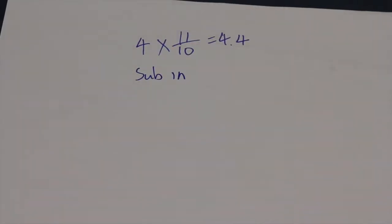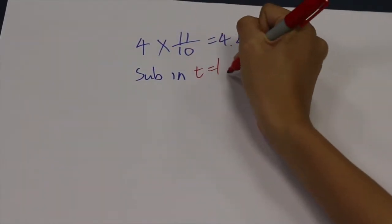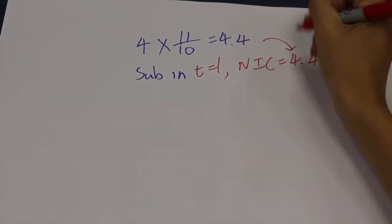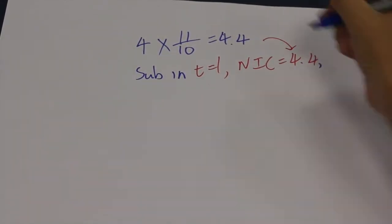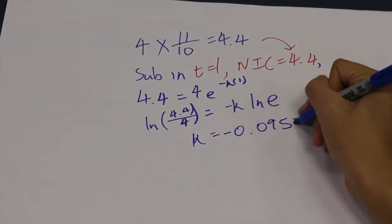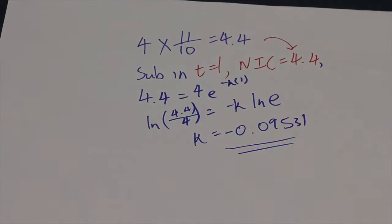Through this we can sub in the values of t equals 1 and NIC equals 4.4. By going through a series of logarithmic functions, we can derive k, which is negative 0.09531. Thus NIC equals 4e to the power of 0.09531t.